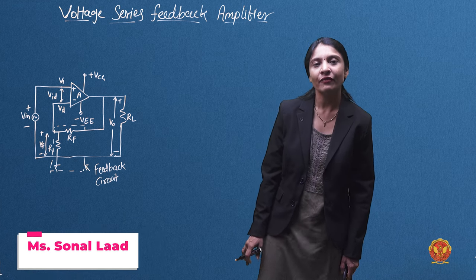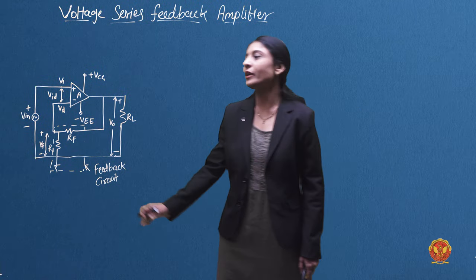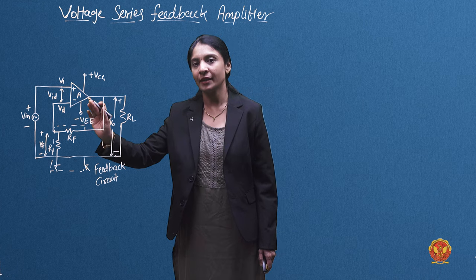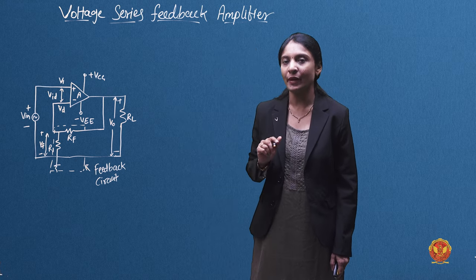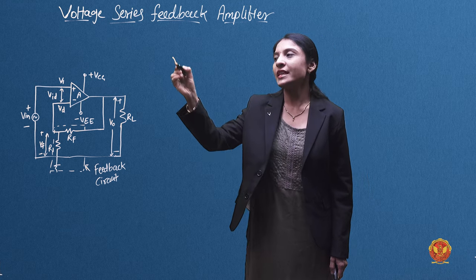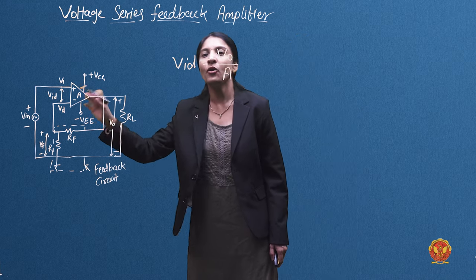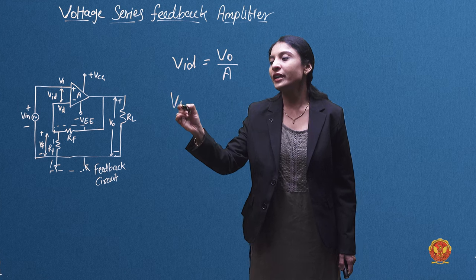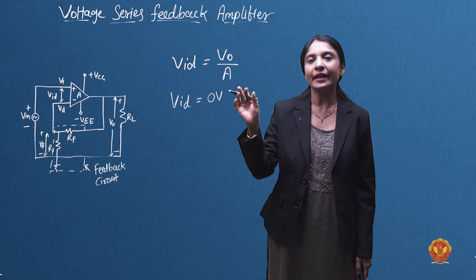Let's see one parameter in the series feedback amplifier, which is the difference input voltage — ideally zero. The difference input voltage means the two input terminals, positive and negative, have a difference of zero. In the series feedback amplifier, the input differential voltage is equal to VO divided by A, where VO is the output voltage and A is the gain. If A is very large, then the input differential voltage will be ideally zero.